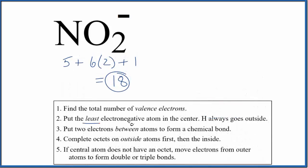We'll put the least electronegative atom in the center of the Lewis structure. That's the nitrogen. So we'll put nitrogen right here, and then we'll put an oxygen atom on either side.